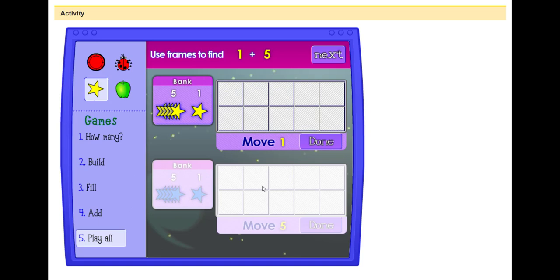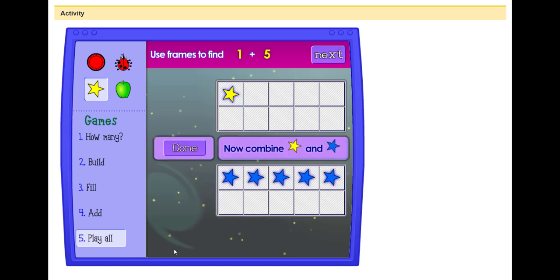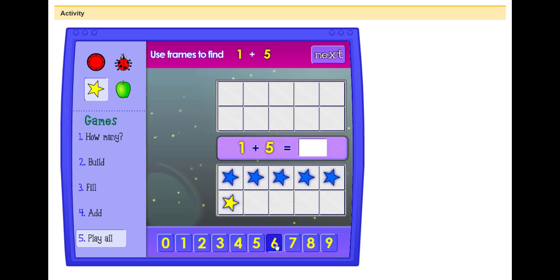And if you do play all, use frames to find one plus five. Now combine the stars. Done. One plus five equals six.